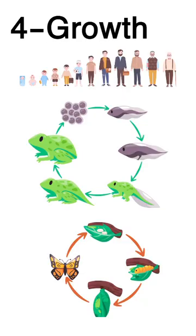Number 4 of the life processes is growth. It means we get bigger in size. You can see from the attached pictures — like the human life cycle, frog and butterfly life cycles — that living things get bigger in size and also change in shape.